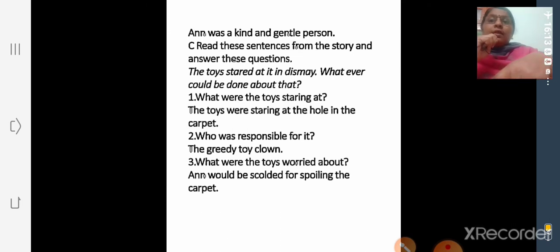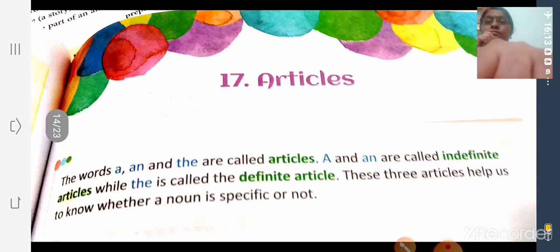Then read these sentences from the story and answer these questions. 'The toys stared at it in dismay.' What were the toys staring at? The toys were staring at the hole in the carpet. Who was responsible for it? The greedy toy clown. What were the toys worried about? Anne would be scolded for spoiling the carpet. So that is why they are all worried. So study these question answers.